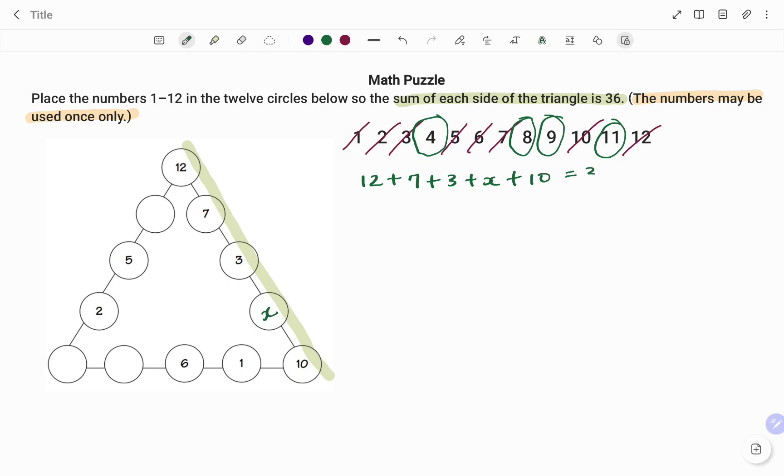So we have all that equal to 36. If I add 12 plus 7, that's 19, plus 3 is 22, plus 10, that's 32. I'm going to have 32 plus x equals 36. Taking out 32 from both sides using the balance method, what I have is 32 minus 32, that's 0, then I have plus x equals 36 minus 32, that's 4. So therefore my x in this case is 4.